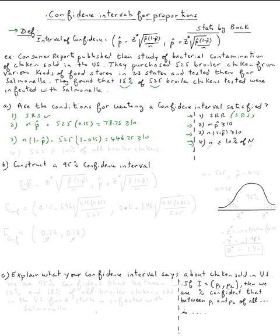Now let's check number four. It's obvious. We want to show that n, this is a sample size, is less or equal than ten percent of the size of population. So our n is 525 and that's obviously less or equal than ten percent, because the population is all broiler chickens sold in the US stores. So 525 is really less than ten percent.